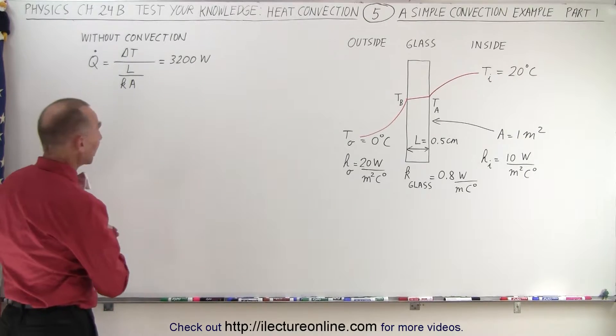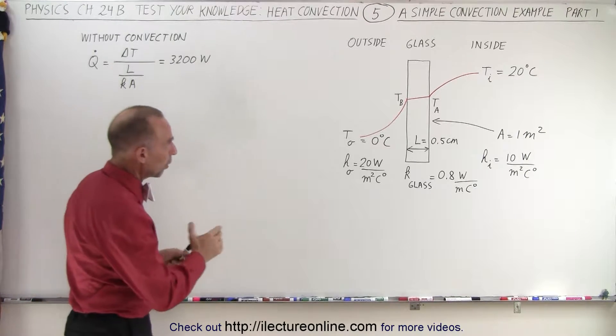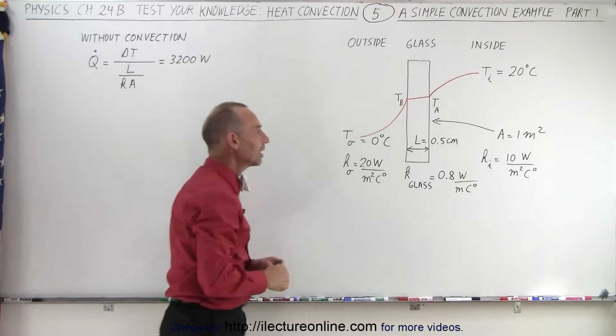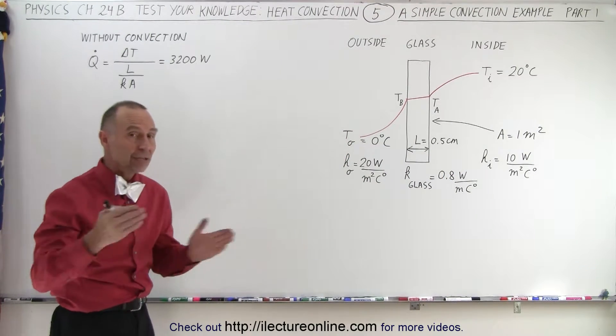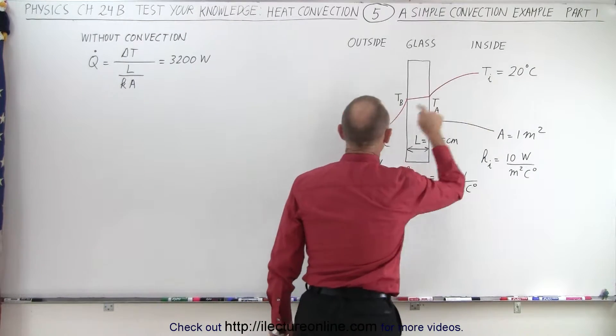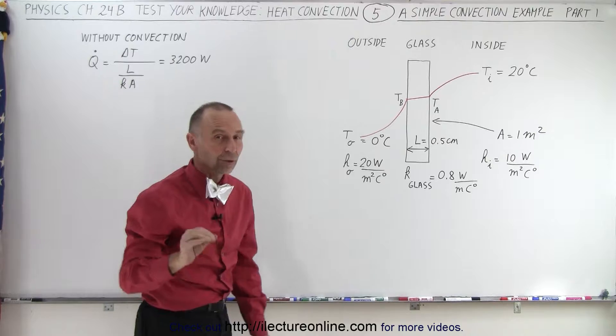What we're doing here is taking what we did before. We took a small window pane that had a width of 0.5 centimeters with a known conductivity constant, and we calculated the heat transfer across the window when the inside temperature was 20 degrees centigrade and the outside temperature was 0 degrees centigrade.